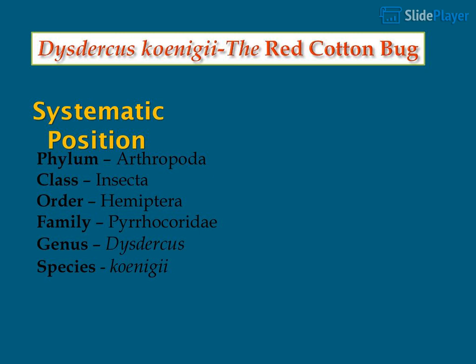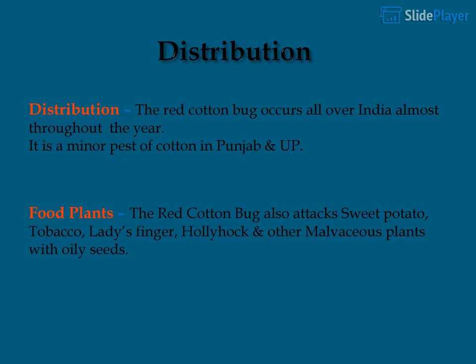Dysdercus koenigii, the Red Cotton Bug: systematic position — Phylum Arthropoda, Class Insecta, Order Hemiptera, Family Pyrrhocoridae, Genus Dysdercus, Species koenigii. The red cotton bug occurs all over India almost throughout the year. It is a minor pest of cotton in Punjab and Uttar Pradesh.